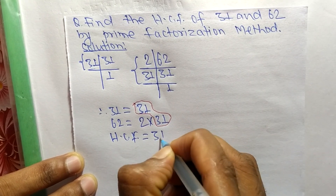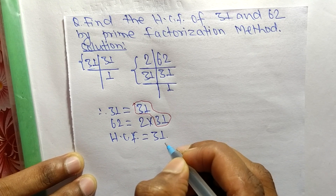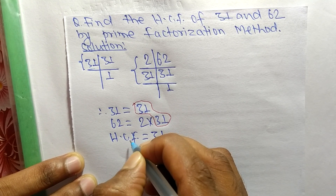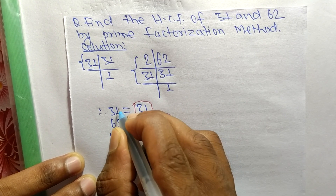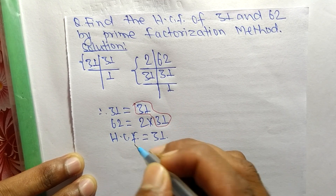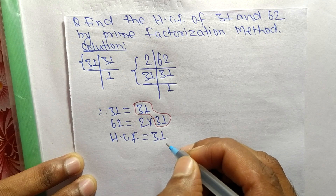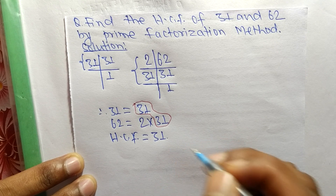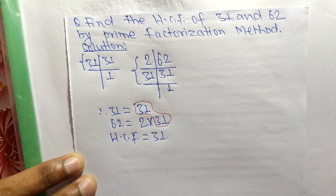So 31 is the HCF of 31 and 62. That's all for today, and thanks for watching.